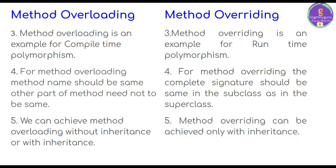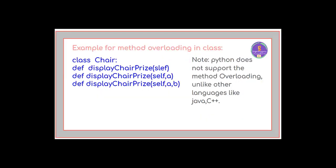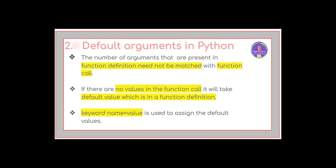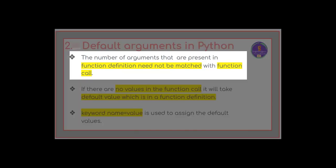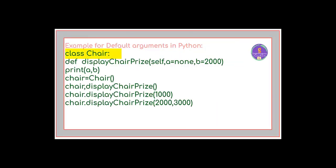Let's see the example for method overloading and method overriding. To achieve method overloading in Python we have to use default arguments. Default arguments in Python means the number of arguments present in the function definition need not match the function call. For example, 'Chair' is a class which has a method called 'display_chair_price'.